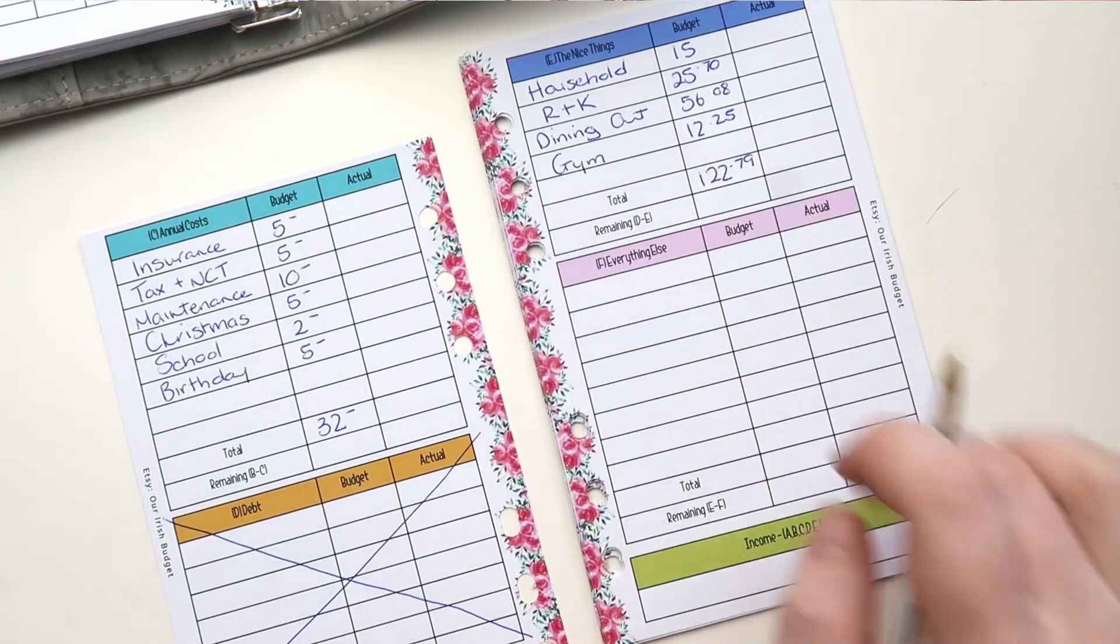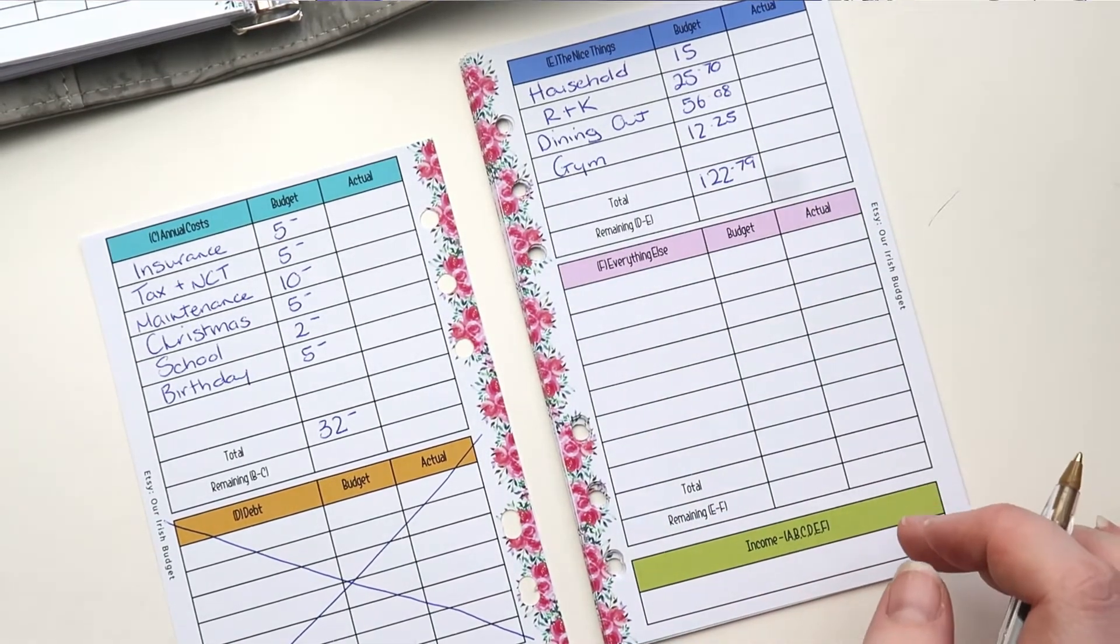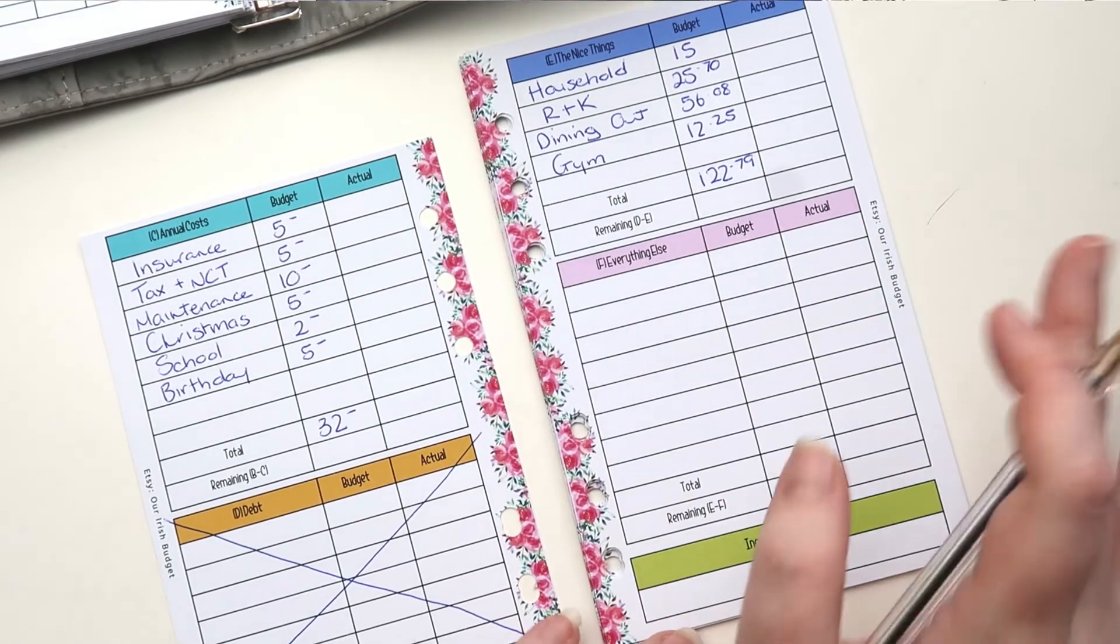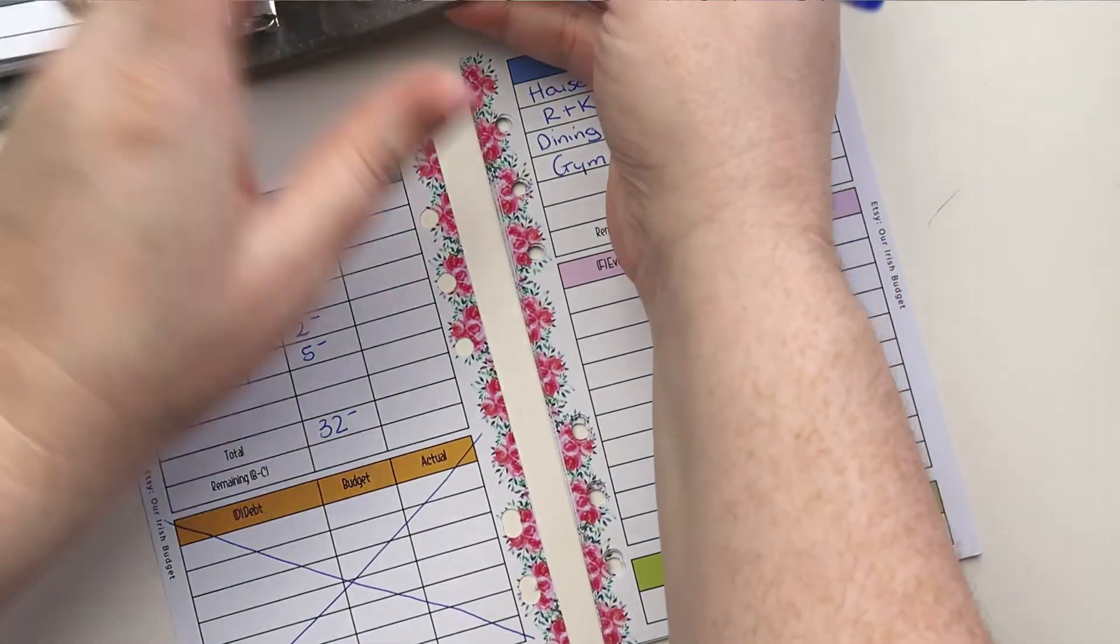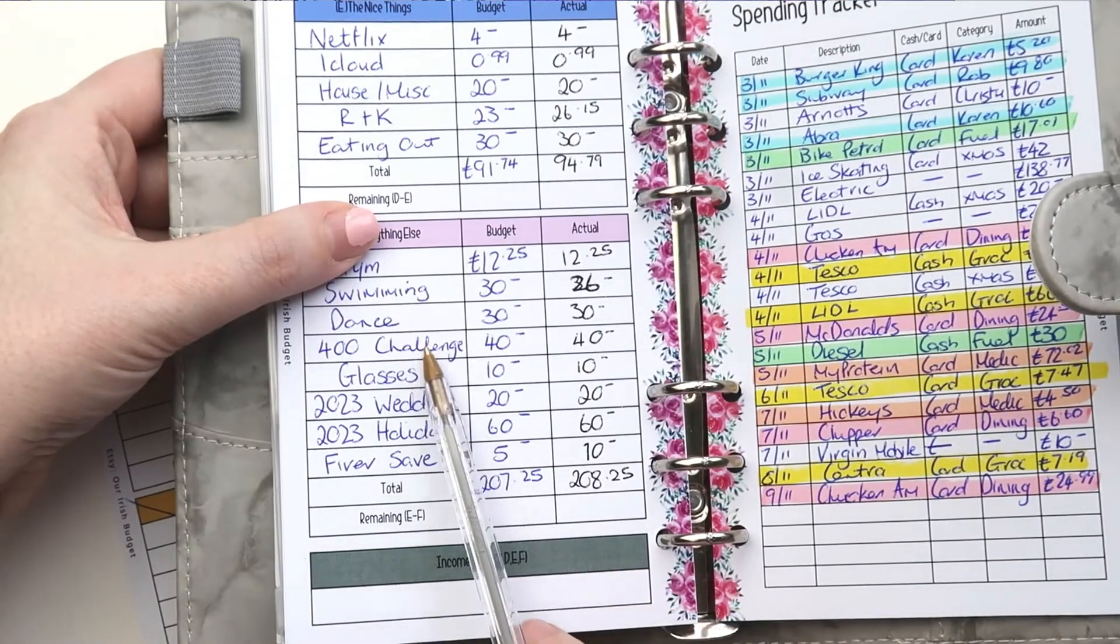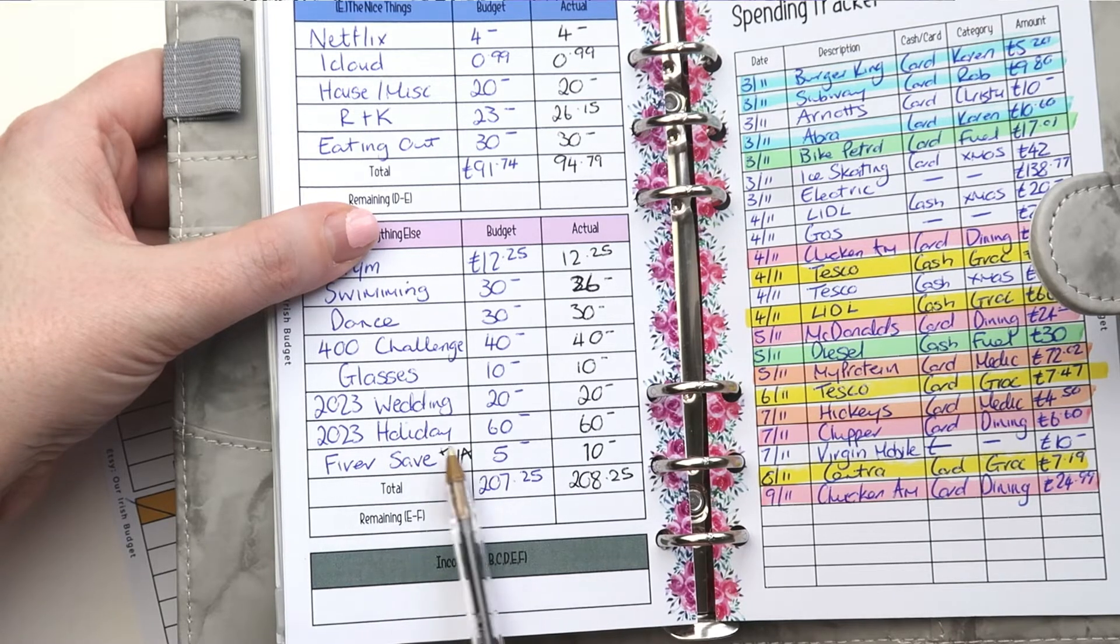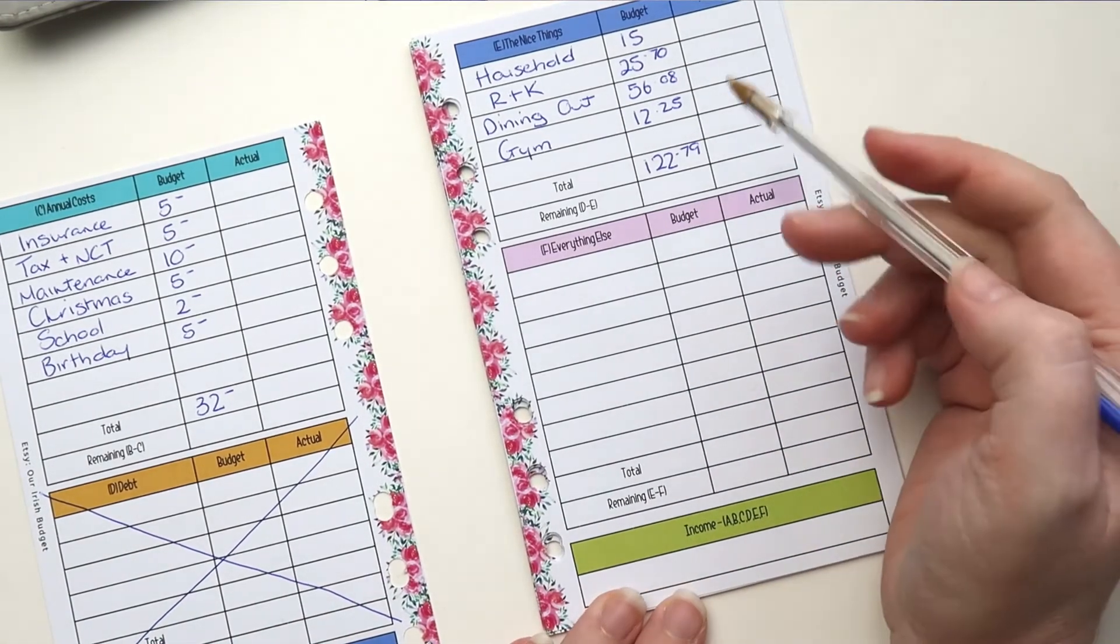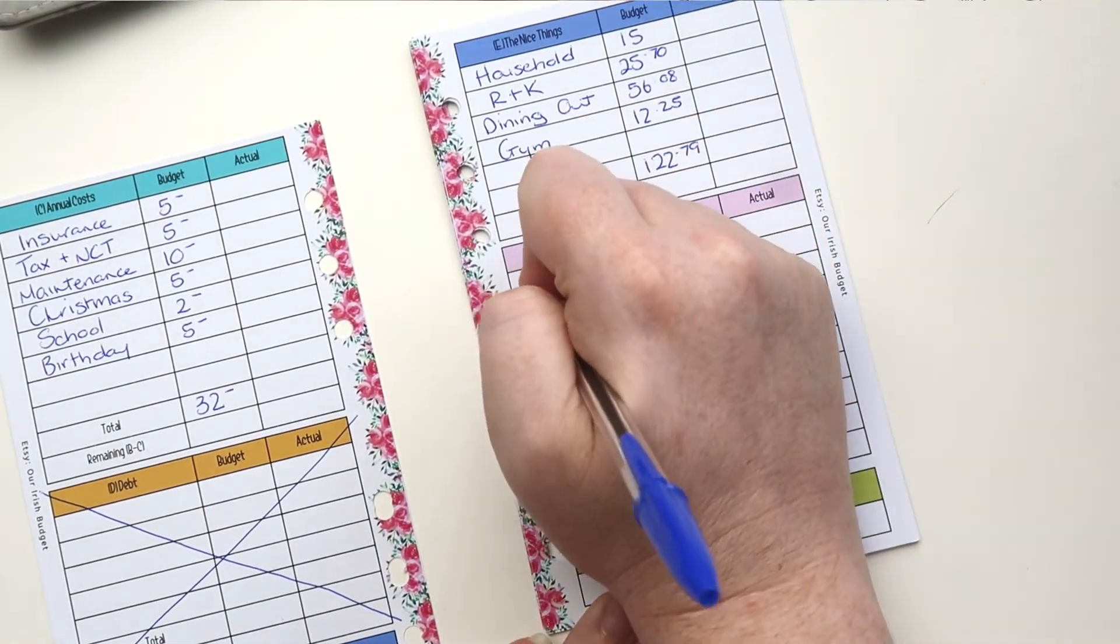And then if you've any money left, you move on to everything else. So for us, we usually have a lot of challenges. If we go back to last week, you'll see we had swimming, dancing, 400 glasses, wedding, holiday, fiber challenge and a night away. So these are all the ones we have, but for this week, because of the overspends in other areas, we're not going to do as many.